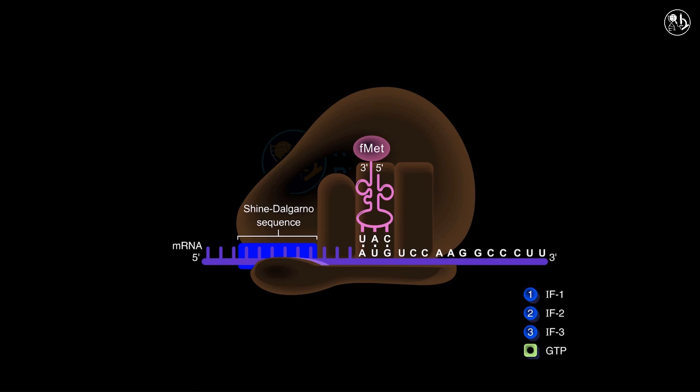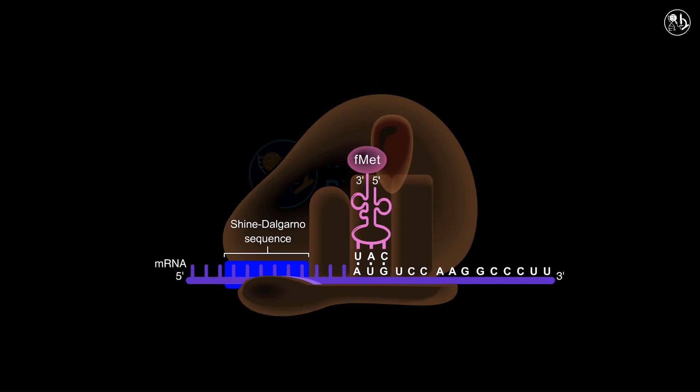The fMet tRNA is now located in the P site of the ribosome with its anticodon hydrogen bonded to the mRNA start codon. The initiation is now finished and upon completion of translation initiation, the process of elongation commences.